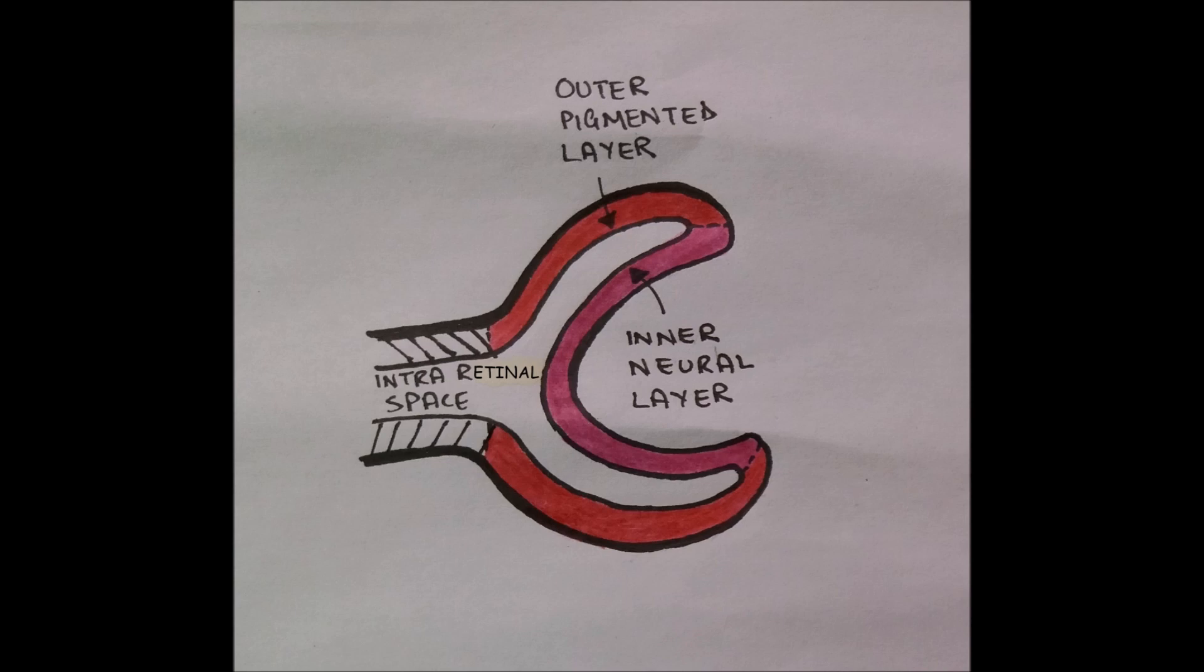In part 1 of this series, we have already learned how the Optic Cup is formed. So just a recap. The Optic Cup is a double-walled structure having an inner neural layer and an outer pigmented layer separated by intra-retinal space.